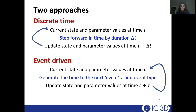So the random amount of time between events is drawn from a distribution, and you update the state and parameter values after that amount of time has passed, as opposed to the fixed amount of time used in discrete-time approaches.